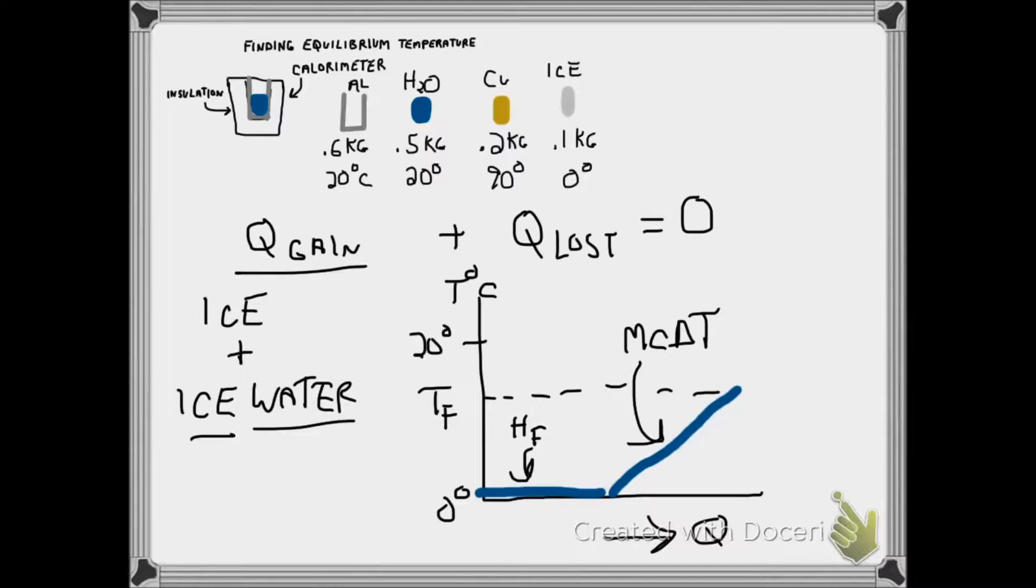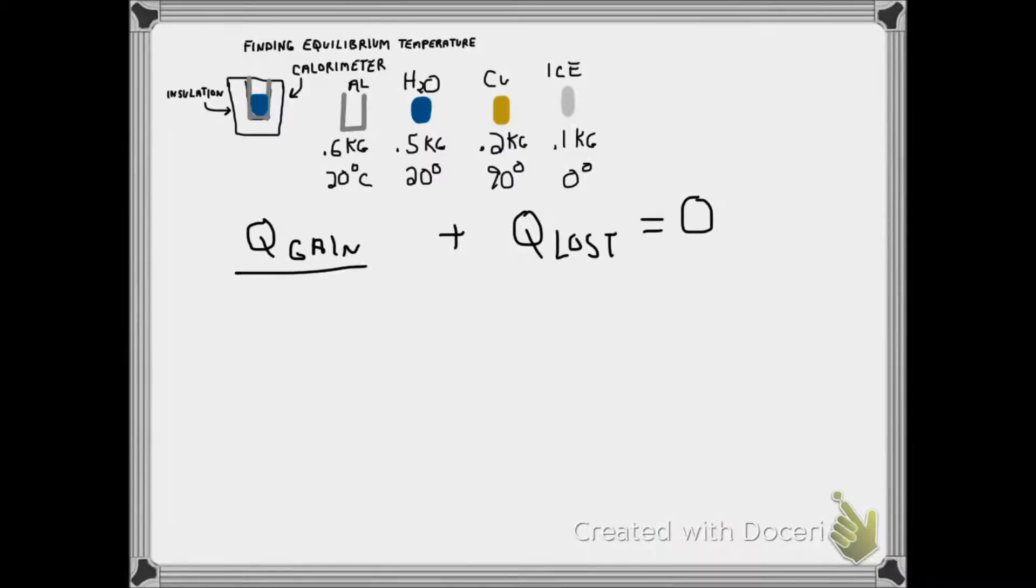Then we can finally use MC delta T once we're 100% water. Using actual numbers, we have 0.1 kilograms of ice times the heat of fusion of ice to water, which is 3.34 times 10 to the 5th joules per kilogram. That would be on your colored sheet.